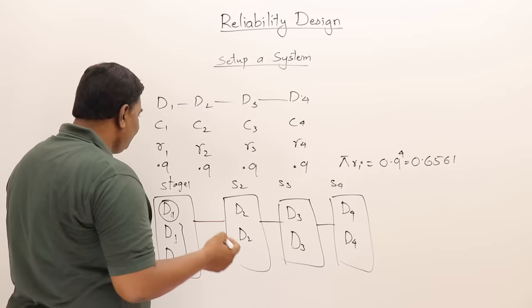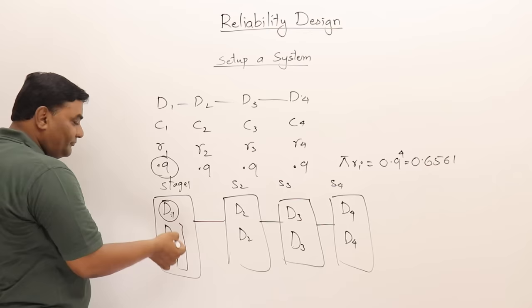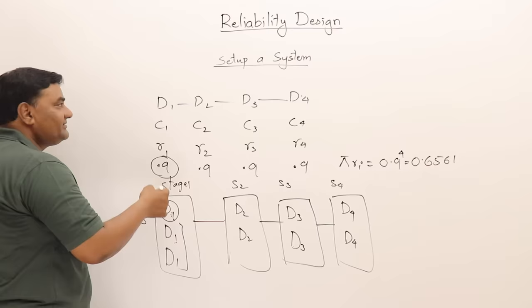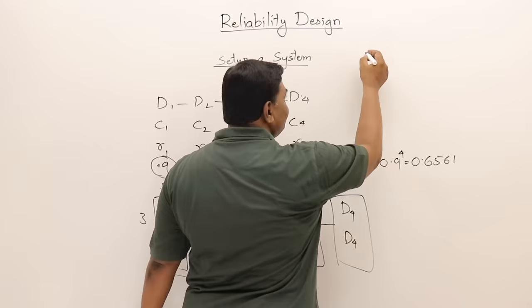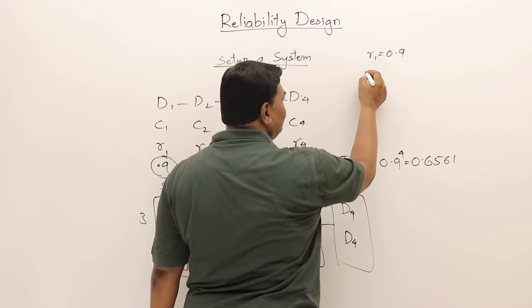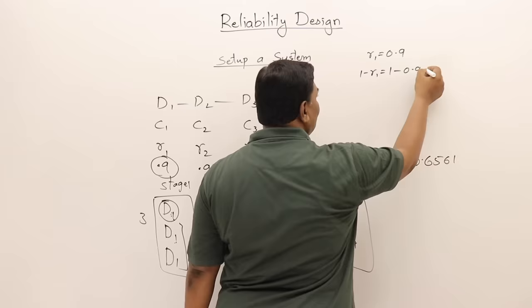Now let us see how to determine whether the reliability of a stage has improved. Suppose I have three copies of the first device, each with reliability 0.9. Let us learn how to calculate the reliability of a stage. For the first device, the probability of working good is 0.9.